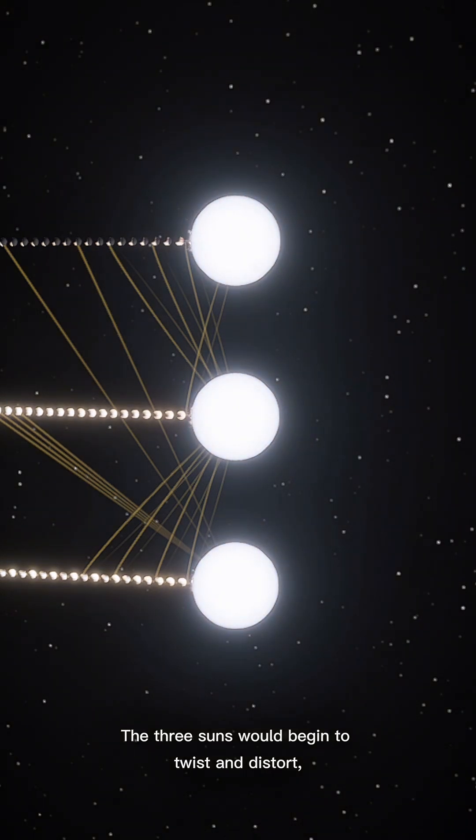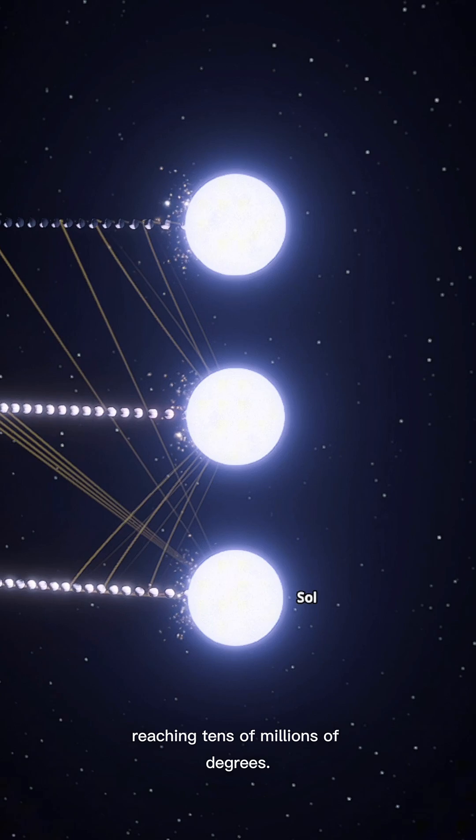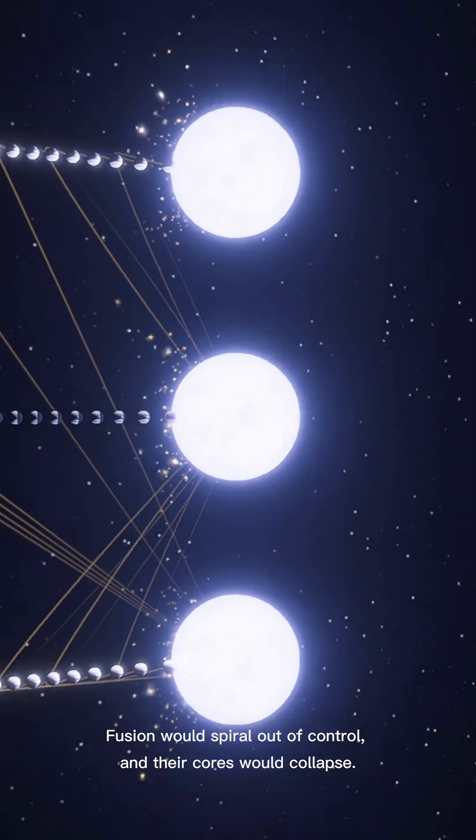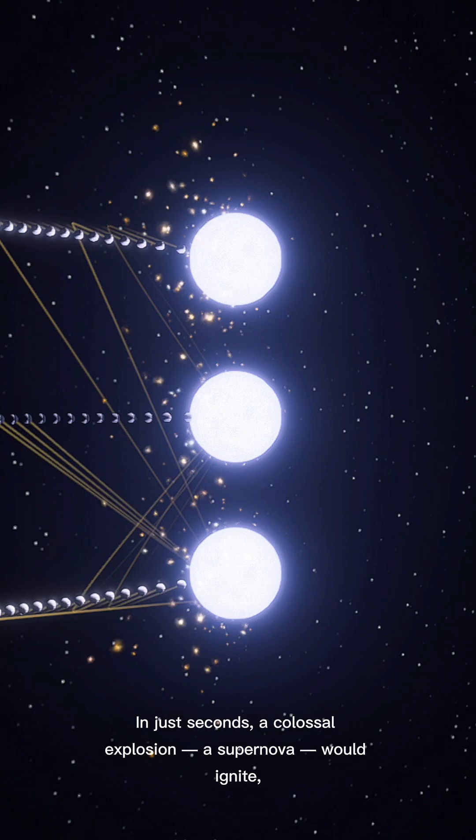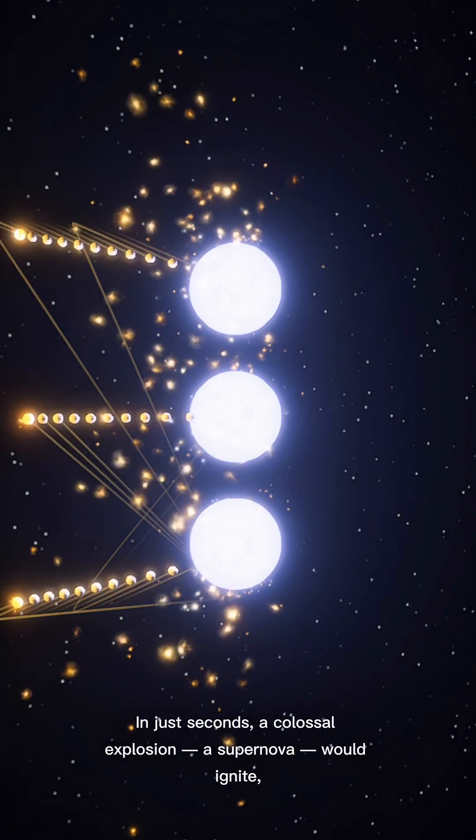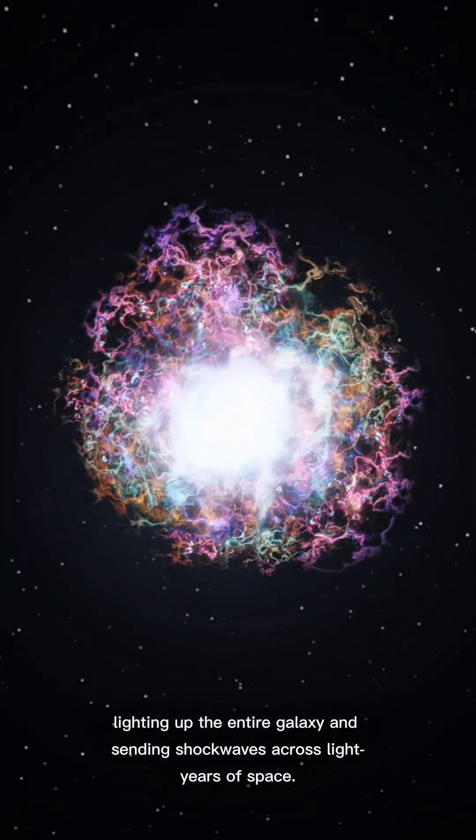The three suns would begin to twist and distort, reaching tens of millions of degrees. Fusion would spiral out of control and their cores would collapse. In just seconds, a colossal explosion—a supernova—would ignite, lighting up the entire galaxy and sending shockwaves across light-years of space.